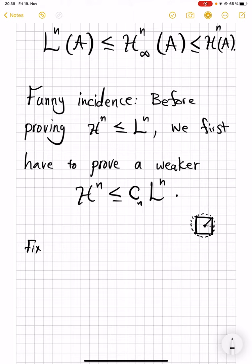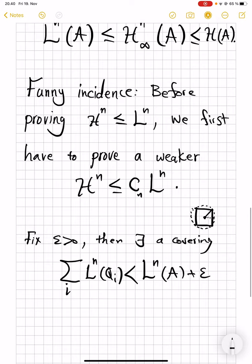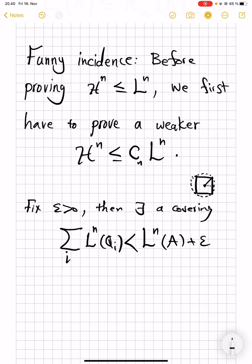So for example, with this in hand, fix some epsilon positive, then there exists a covering that is almost realizing L^n of A. So L^n of A is infimum, so if we add some epsilon, there is some particular member of the set over which we are infimizing that is less than this. So there's some covering by cubes of A for which this happens.